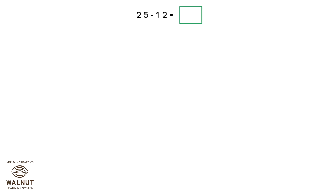Look at this problem: 25 minus 12. Counting forward from 12 to 25 is a lot of counting. Let's find a faster way to do it. We will split both numbers into tens and units. So for 25, we have two tens and five units. For 12, we have one ten and two units.